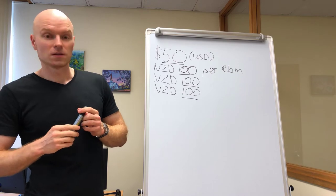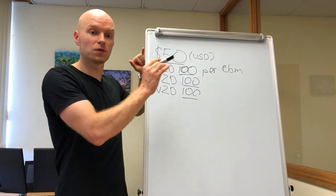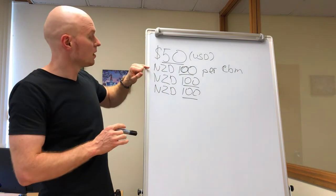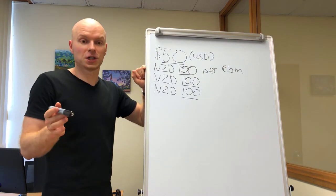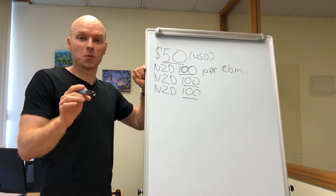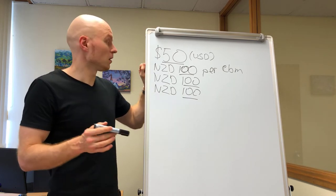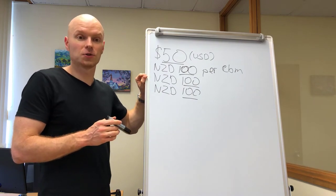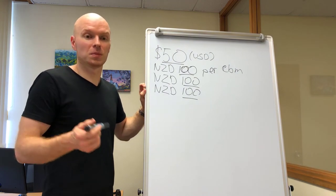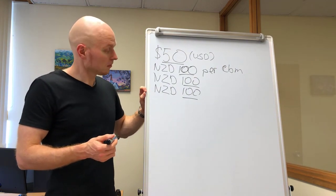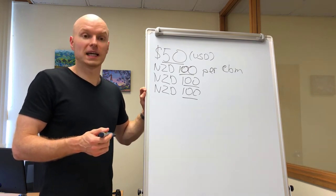So far you've got $50 for ocean freight to move the goods from Shanghai to Auckland port, then $100 to move your pallet from the port to the warehouse — that includes your share of container transport and unloading — then $100 to the customs broker to do the clearance, and then $100 for general documentation to the shipping line and the freight forwarder.